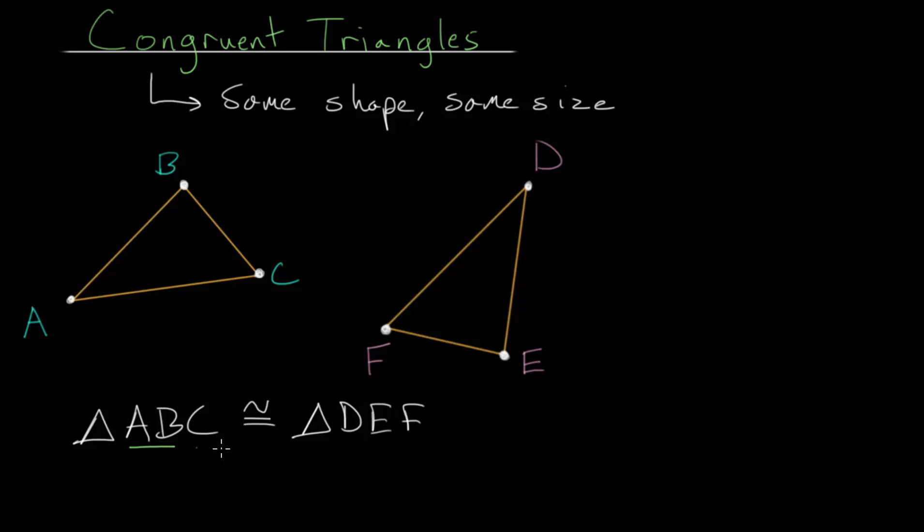So for instance, the line segment or the side AB is equal to this side DE. Notice how the letters correspond to each other. We can say that line segment AB is equal to line segment DE. We can also say that line segment BC and EF, these shorter segments, are equal to each other. So BC is equal to EF.